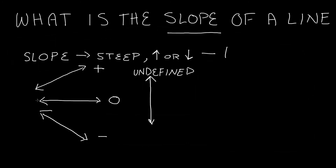So to recap: if it's horizontal — completely flat, doesn't increase or decrease as it goes to the right — it has a slope of zero. If our line decreases as it goes to the right, it has some sort of negative slope. And if our line increases as it goes to the right, it has a positive slope.